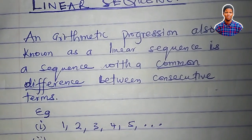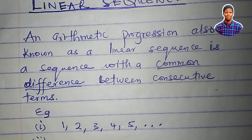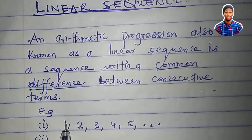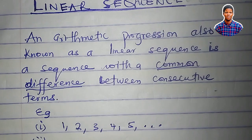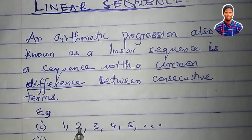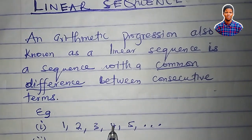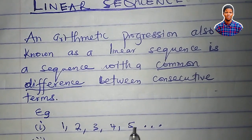The common difference is obtained by subtracting the first term from the second term. Two minus one is one. Three minus two is still one. Four minus three is one. Five minus four is one. The common difference is one.